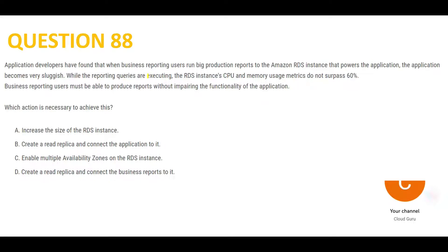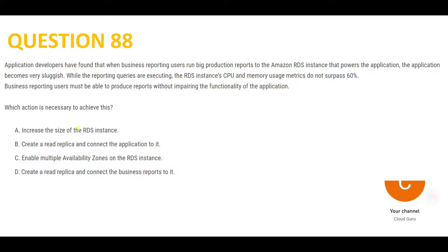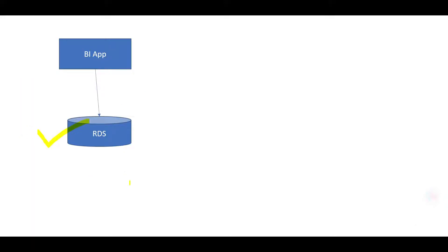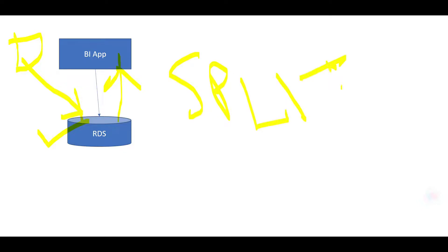Let's look at the next question. Some people are trying to access reports and there is a performance issue. There is a BI app and a database. What will you do to solve it? Increasing the size of the RDS instance gives no guarantee the bottleneck won't happen. What's occurring is there are write requests and read requests both hitting the database. Whenever you get such a use case, always split the read and write.